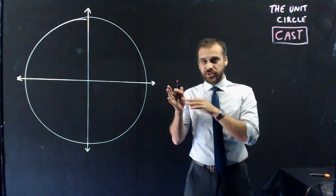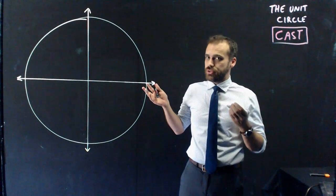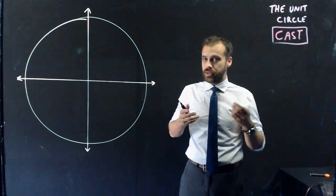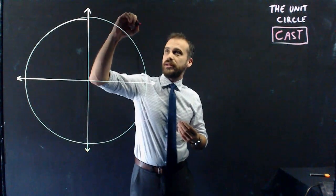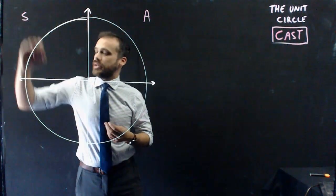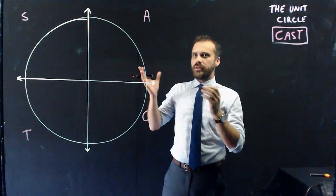Alright, so in this video we're going to talk about the unit circle and cast. Now, every math student learns cast at some point or some other variation of cast. They do it by writing the letters C, A, S, T here. Now, why? I'll explain.